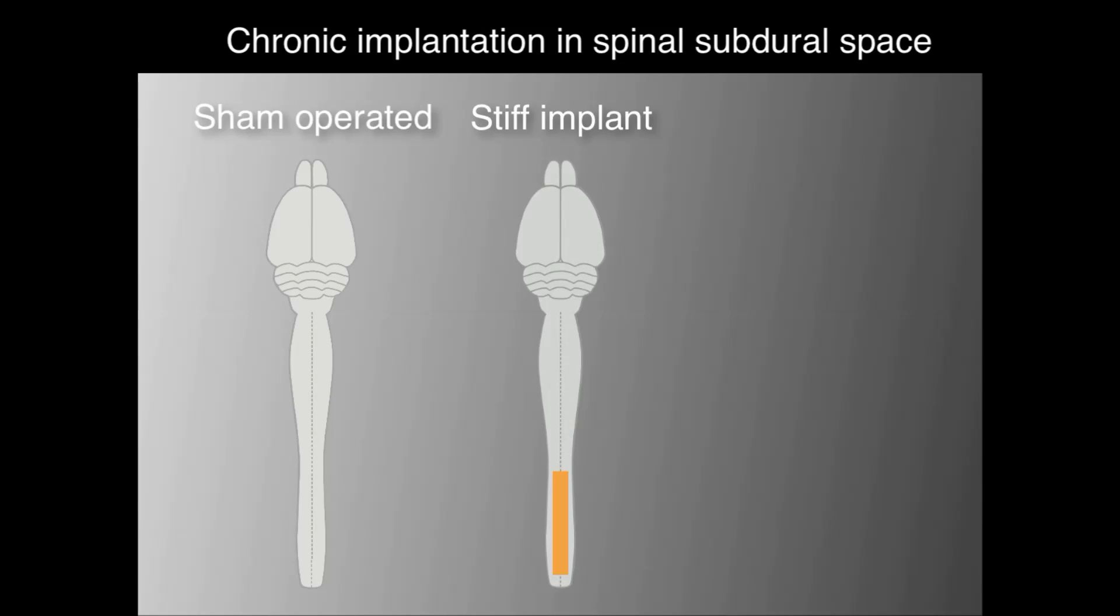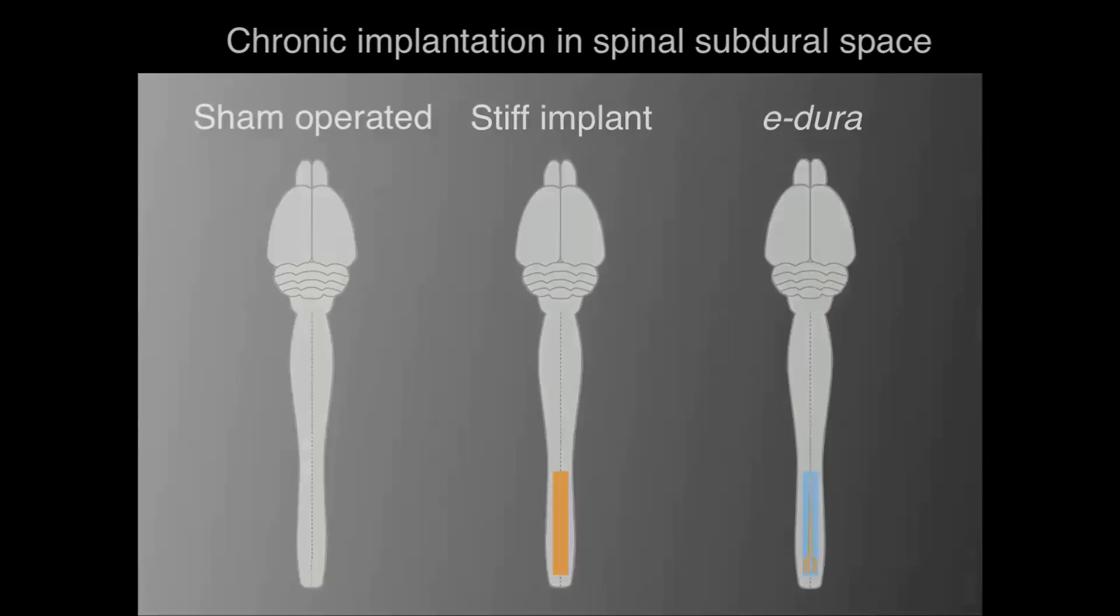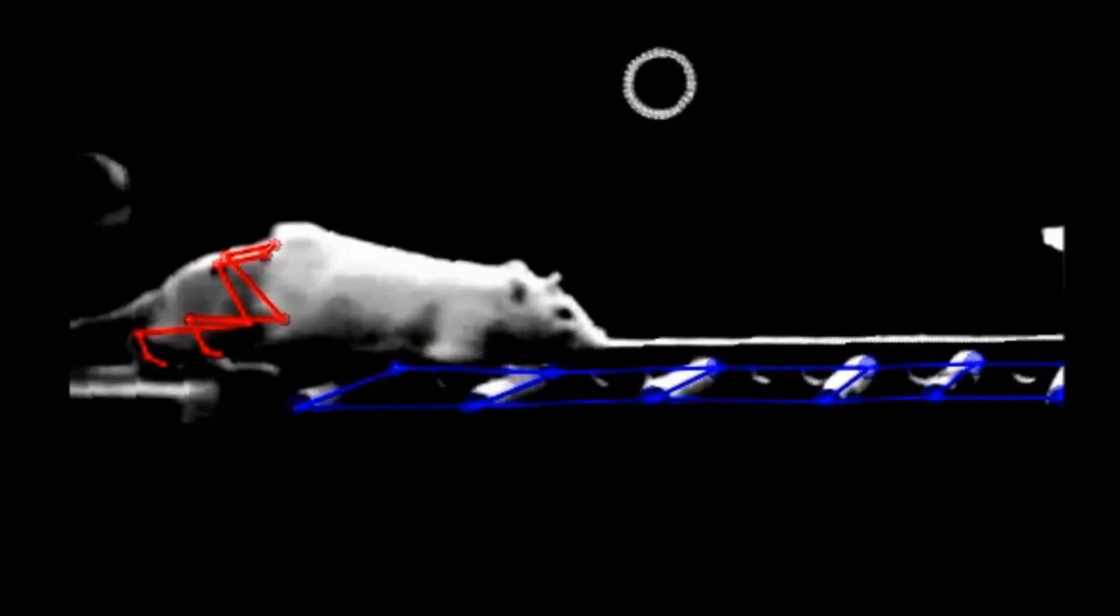We evaluated the anatomical and functional impact of the soft eDura versus stiff polyamide implants that have been placed below the dura matter of the spinal cord for six weeks.